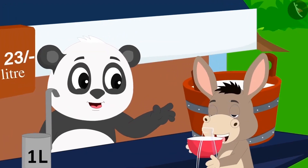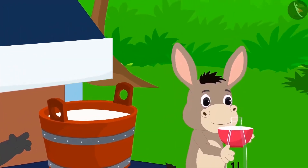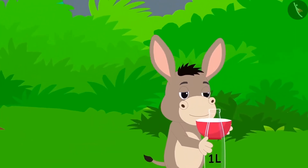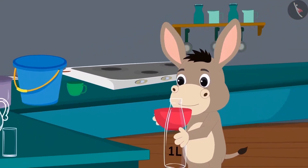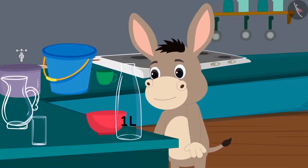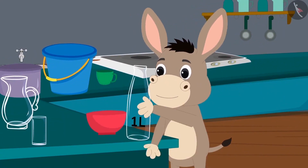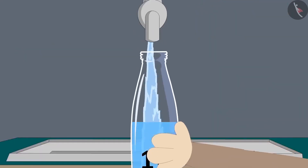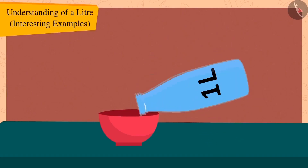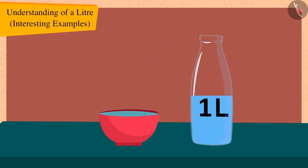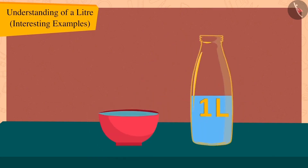Bholla thanked Golu and happily went to his house with that one litre bottle. Bholla got excited and collected some of his utensils. He first filled Golu's one litre bottle with water fully, then poured the water into his bowl. But what is this? Bholla's bowl is full, but there is still a lot of water left in that one litre bottle.